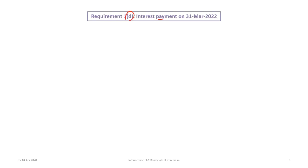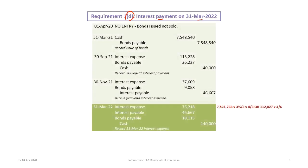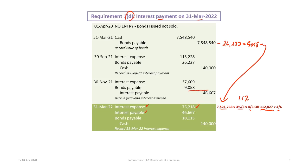For the interest payment on March 31st 2022: the bond payable balance is $7,548,540 minus $26,227 minus $9,058 = $7,513,255 — wait, or using the table, $7,521,768. We take that times 1.5% times 4/6 for the remaining portion of the six-month period since September, giving interest expense of $75,218. Interest payable is debited for the previously accrued $46,667, cash is credited for $140,000, and bond payable receives the remaining debit of $18,115.